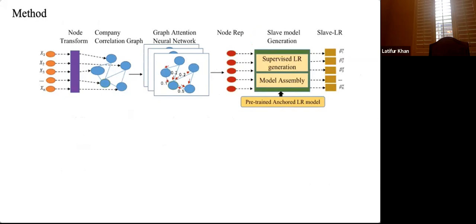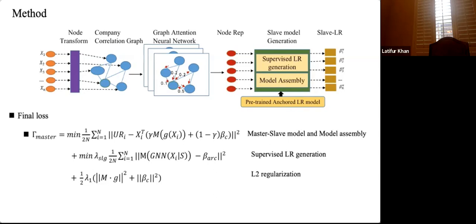The overview of the master-slave model: given X_i, we feed it into a GNN model (graph attention neural network) to get node representations. We then add the two regularization techniques — supervised linear regression and model assembly — to generate slave model beta V. The loss function contains three components: the prediction error between unexpected revenue and our prediction (assembled with linear model beta_C); the supervised linear regression regularization restricting GNN output around beta_ARC; and L2 regularization.